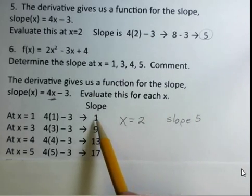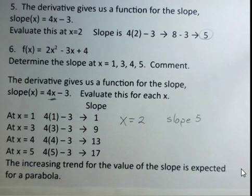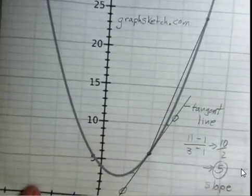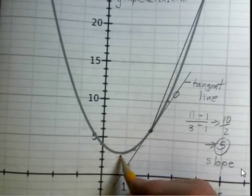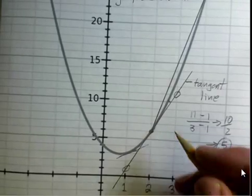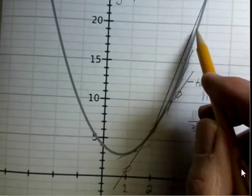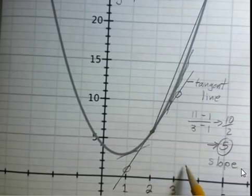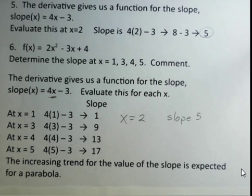We're getting a trend: starting from x equals 1, then 2, 3, 4, and 5, the slope is increasing. Is that correct? Looking back at the graph of this quadratic, when x is 1 we have a tangent line running here, and for x equals 2, 3, and so on, the tangent lines get steeper and steeper on this parabola as x increases to the right. So yes, it is expected that the slope increases as the x value increases for this parabola.